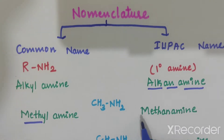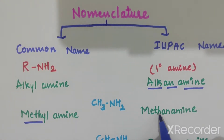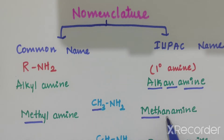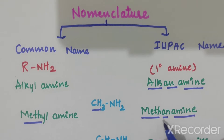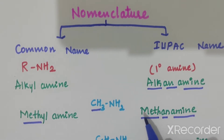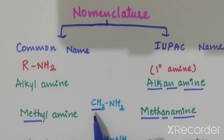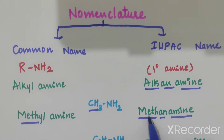In case of IUPAC nomenclature for CH3NH2, this is CH3, so we can write meth-an-amine. 'An' and 'amine' are common here, and 'meth' is for the methyl group — CH3, one carbon, so we write meth. So it is meth-an-amine.